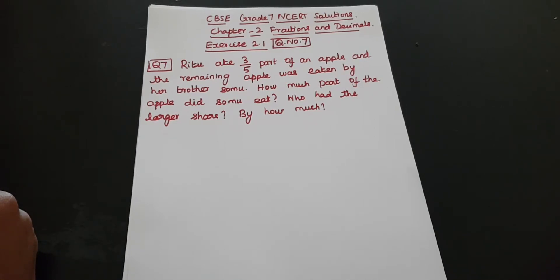Reeta ate 3 by 5 part of an apple and the remaining apple was eaten by her brother Somu. How much part of the apple did Somu eat? Who had the larger share? By how much?